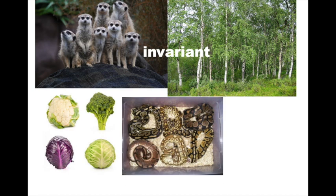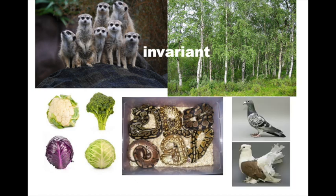Another example of variation is ball pythons — I used to breed ball pythons. You can see they're all the same species, python regius, the ball python or the royal python, but they have very different patterning and colorations, which are variables. Pigeons are another example of a lot of variation. When we get to talk about Charles Darwin, we'll see a lot more about these variables in the populations of pigeons that helped Darwin start thinking about what evolution is and how it actually occurs in nature.